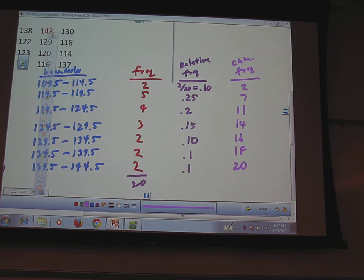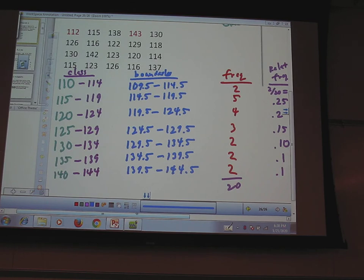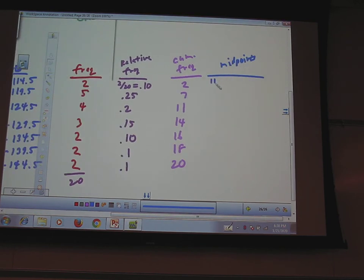Midpoints. We need to take 110 and 114 and average them. 110 plus 114 divided by 2, I get 112. And the next one, if I average those ones, I should get 117 and then 122. Do you guys see the pattern? They're separated by 5 because that's my width, my class width: 127, 132, 137 and 142.